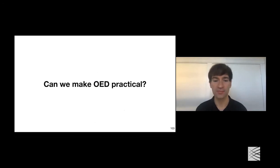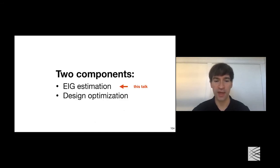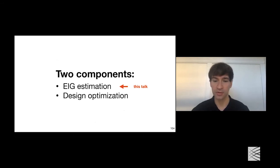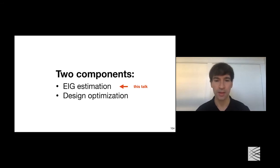Can we make OED practical on larger and more complex models? There are two important components: EIG estimation — how do we actually estimate the expected information gain as a function of design — and design optimization. Even if we can compute the EIG, we still need to optimize it with respect to design. Both components are potentially difficult. I'm going to focus for the remainder of the talk on EIG estimation.